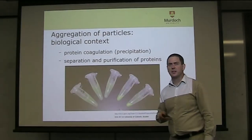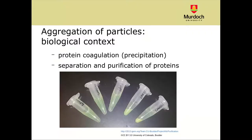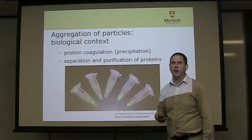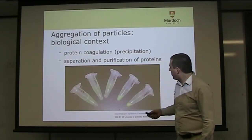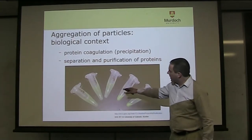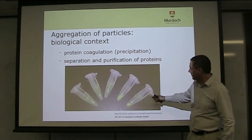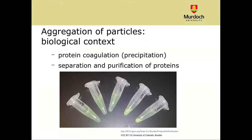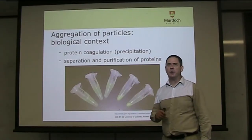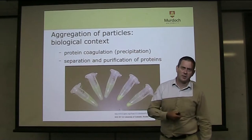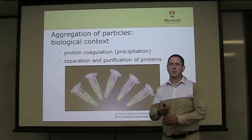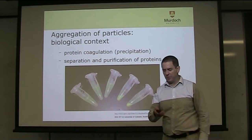First, some context. From biology, we have protein precipitation or protein coagulation. This is useful for separating and purifying proteins. We can see in the illustration — in the photo — that depending on the saline conditions in each vial, we may get more or less protein precipitation. Other applications of aggregation come from mineral processing or wastewater treatment, where we're trying to separate water from solid particulates.